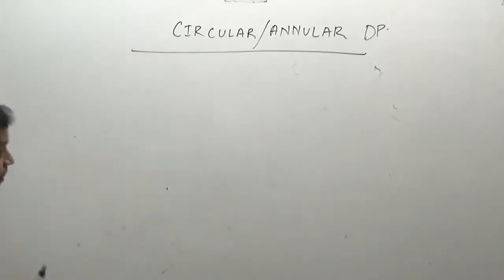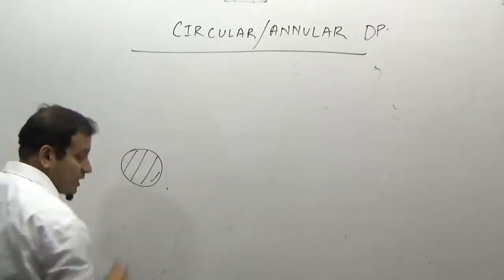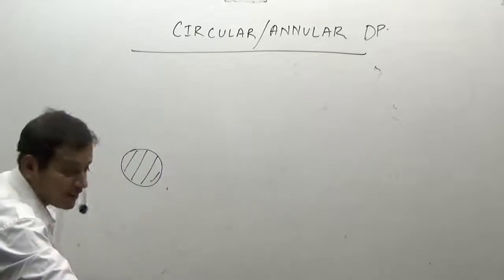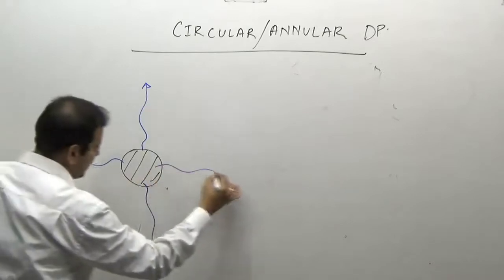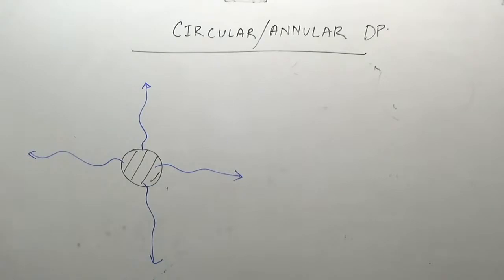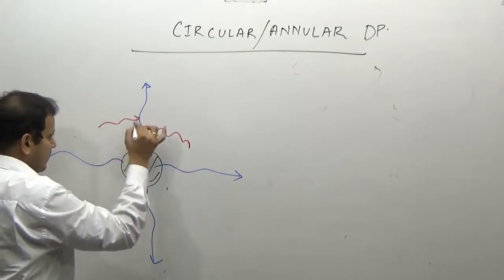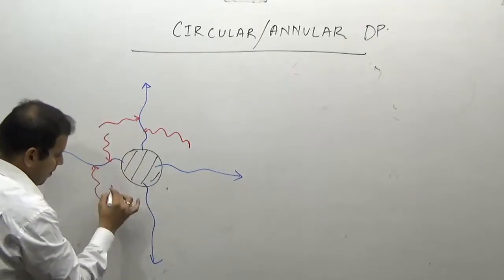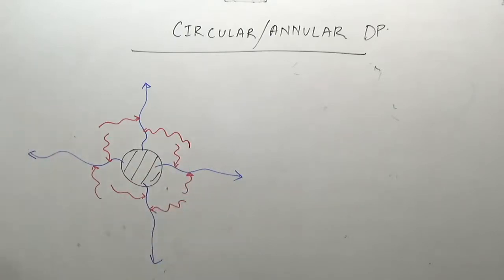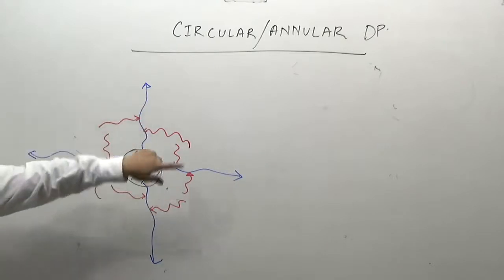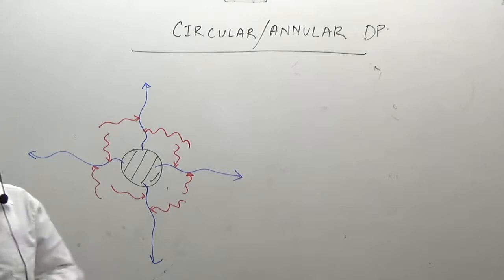Look at this diagram. It forms in dome areas. The main river will flow through the central part of a dome, but the tributaries will join the main river flowing through the softer rocks in such a manner that it looks as if someone has built a ring or a fencing around this kind of drainage pattern.